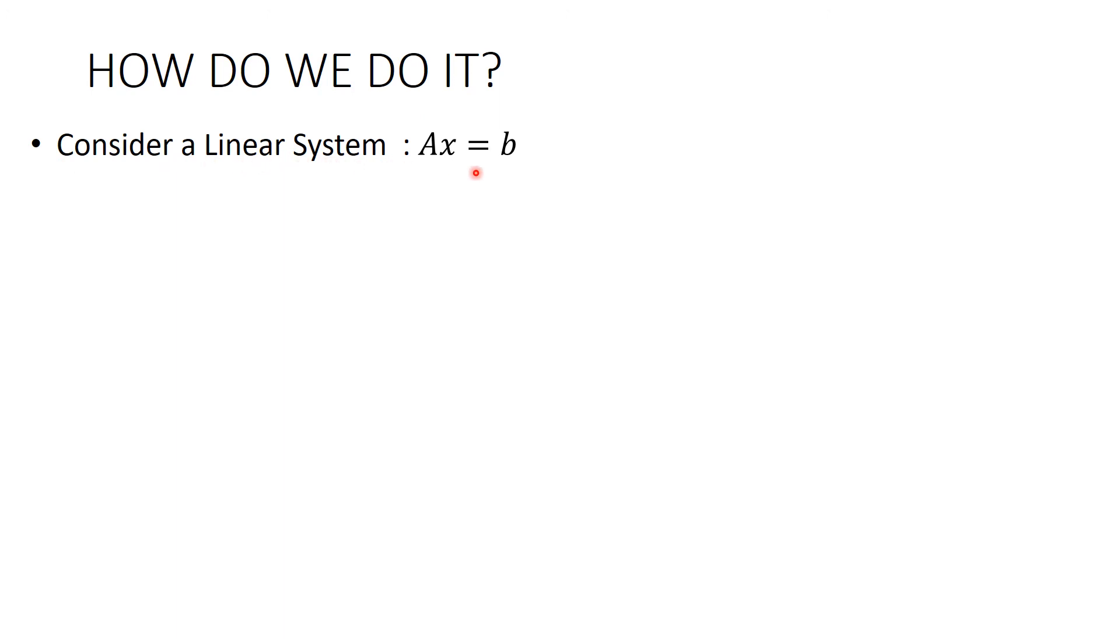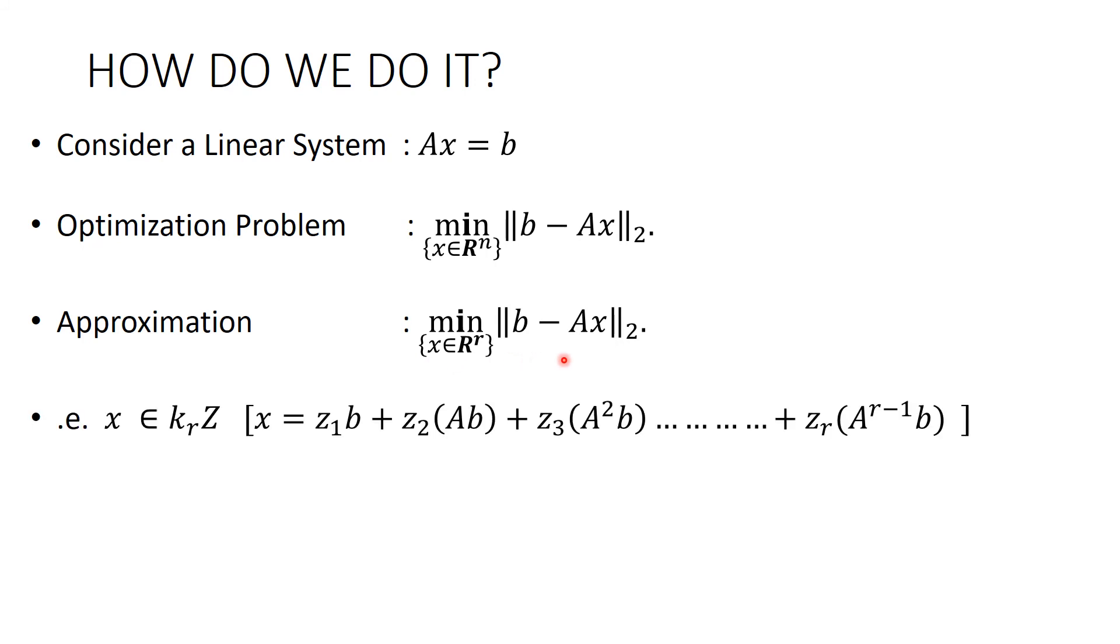Consider a linear subsystem Ax equal to b. Optimization problem is minimization of norm of b minus Ax such that x belongs to n-dimensional space. The approximation would be minimize the norm of b minus Ax such that x belongs to r-dimension, i.e. x belongs to Krylov subspace where x is linear combination of all the basis vector in Krylov subspace. So, the equivalent optimization problem is this expression.